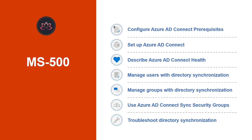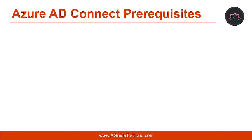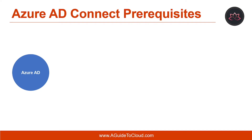So, without wasting any more time, let's get into it. Before you install Azure AD Connect, there are a few things that you need. The first requirement is you need an Azure AD. You can create an Azure free trial to get an Azure AD tenant. You can either use the Azure portal or the Office 365 portal to access the Azure AD tenant.